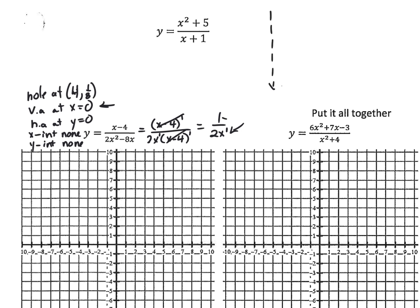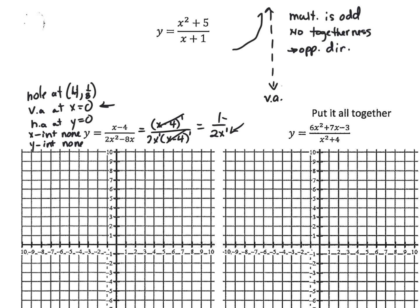Togetherness tells us how the function acts around the vertical asymptote. If my multiplicity is odd, then it has no togetherness. That means that on either side of the vertical asymptote, it goes in opposite directions. So if on this side it goes up, then on this side it would go down.